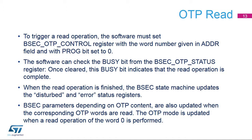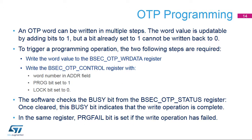The OTP mode is updated when a read operation of word 0 is performed. An OTP word can be written in multiple steps; the word value can be updated by setting additional bits to 1 only — a bit already set to 1 cannot be reset to 0. To trigger a programming operation, two steps are required: write the word value to the BSEC OTP WR data register, then write the BSEC OTP control register with the word number in the ADDR field, the PROG bit set to 1, and the LOCK bit set to 0. The software checks the busy bit from the BSEC OTP status register; once cleared, the write operation is complete. The PRG fail bit is set in the same register if the write operation has failed.